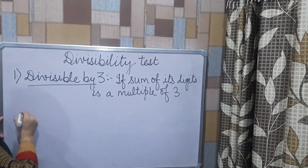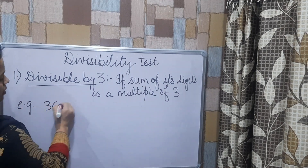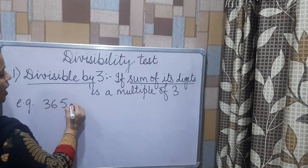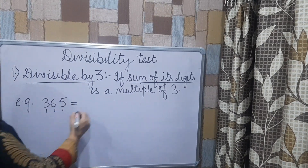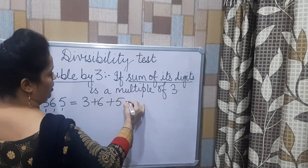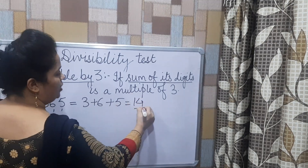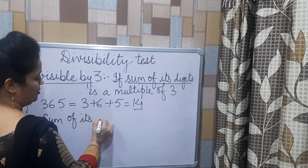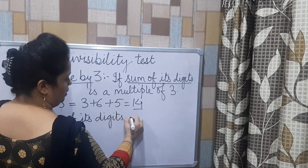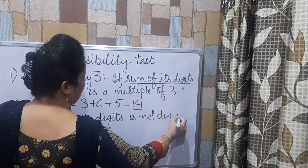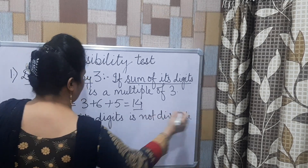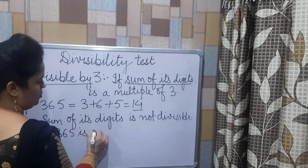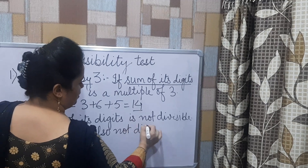Let us discuss this with the help of an example. If I have the number 365, the sum of its digits means I have to add all the digits: 3 plus 6 plus 5. Now 3 plus 6 is 9, and 9 plus 5 is 14. Is 14 a multiple of 3? No. So the sum of its digits is not divisible by 3, meaning 365 is also not divisible by 3.